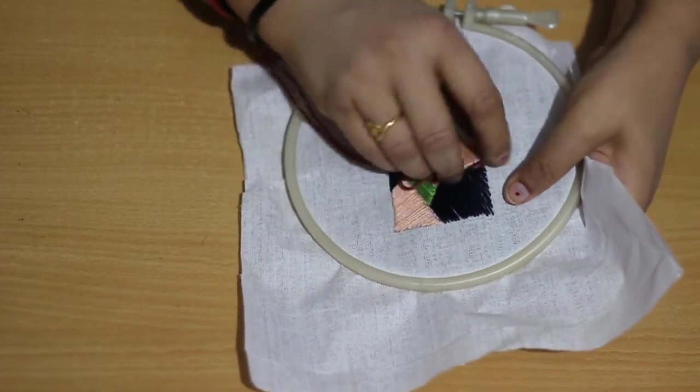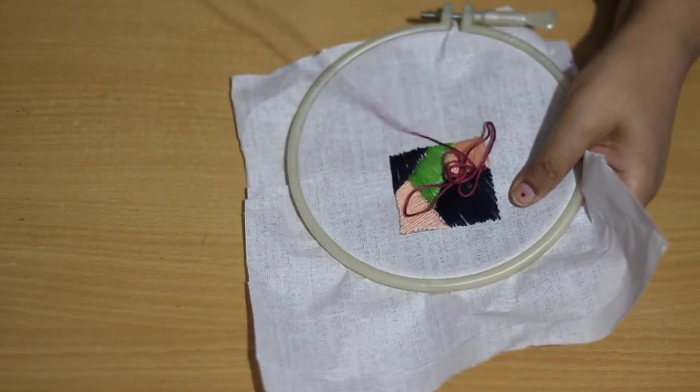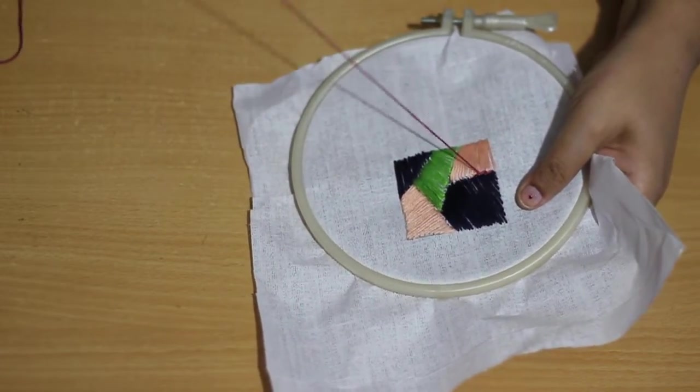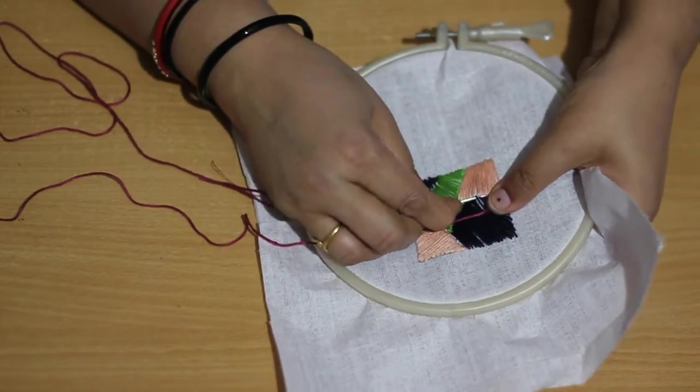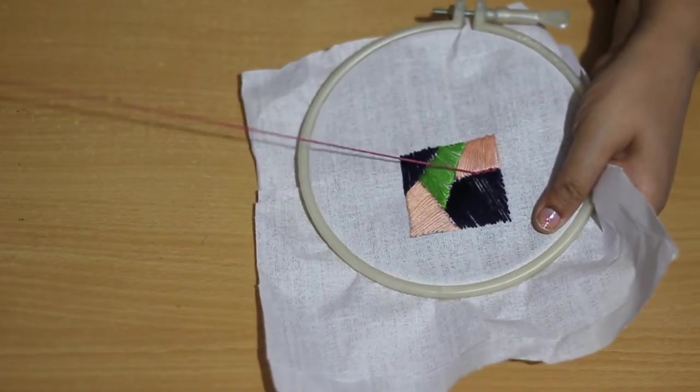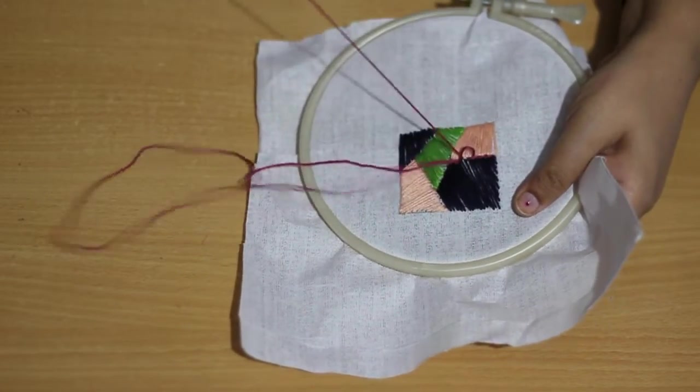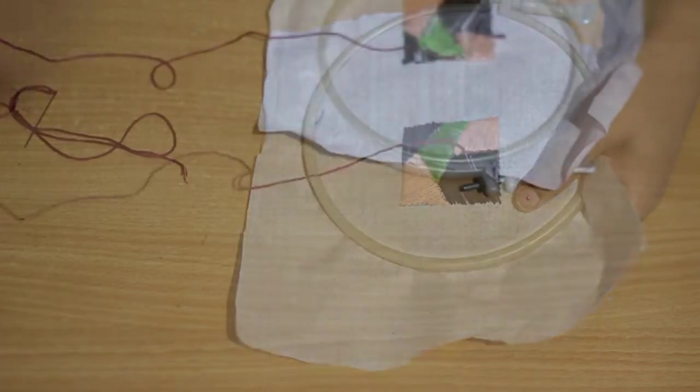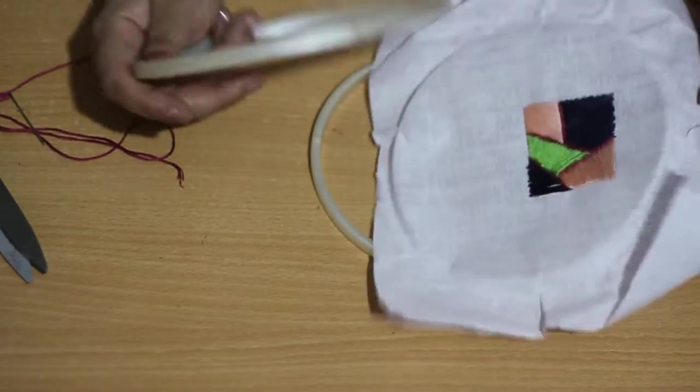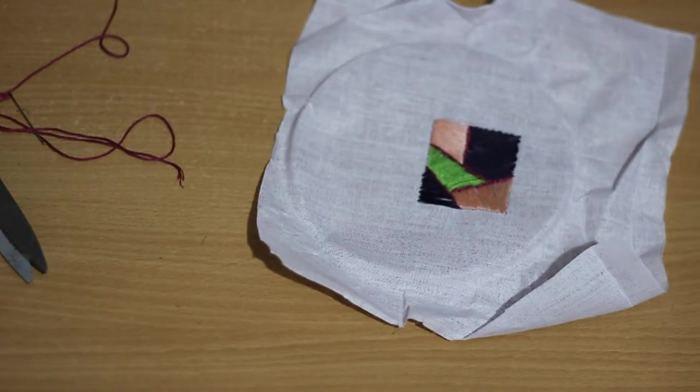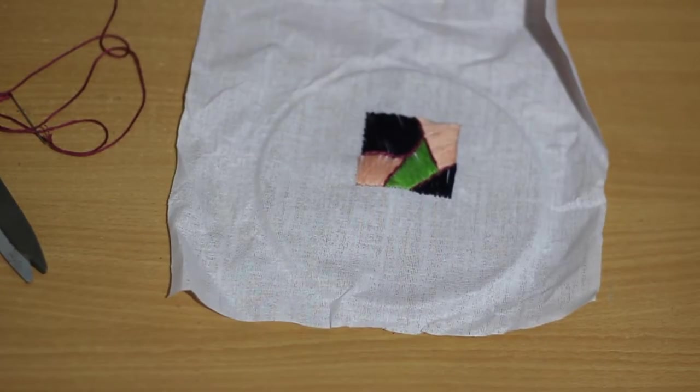I am doing stem stitch for the borderline, using maroon color thread just to give a prominent shape to each part of the geometrical design. After doing borderline, trim it off then open the frame and remove it.